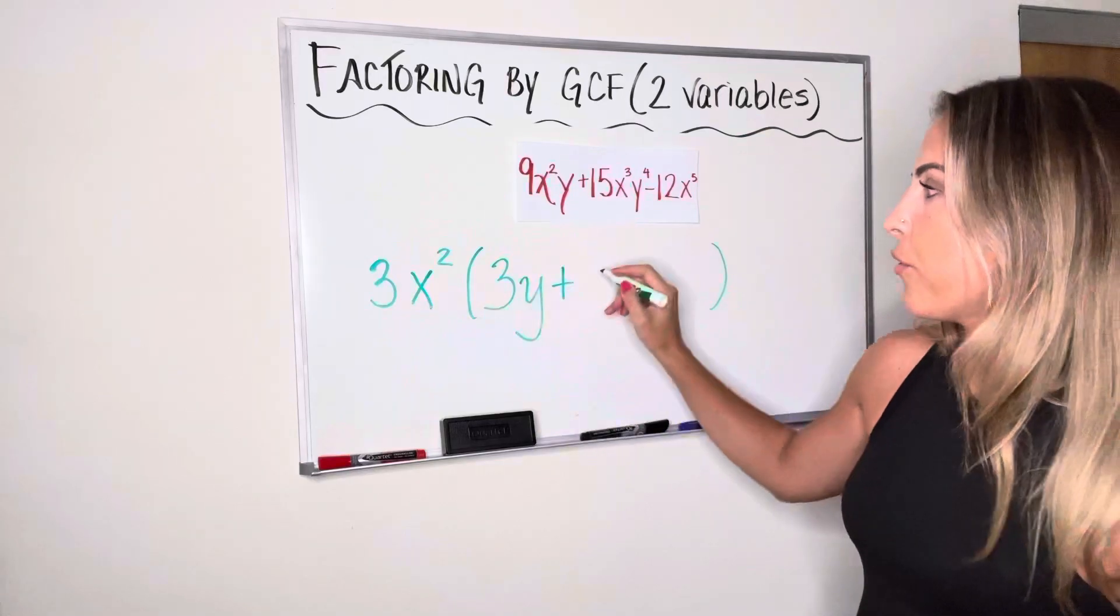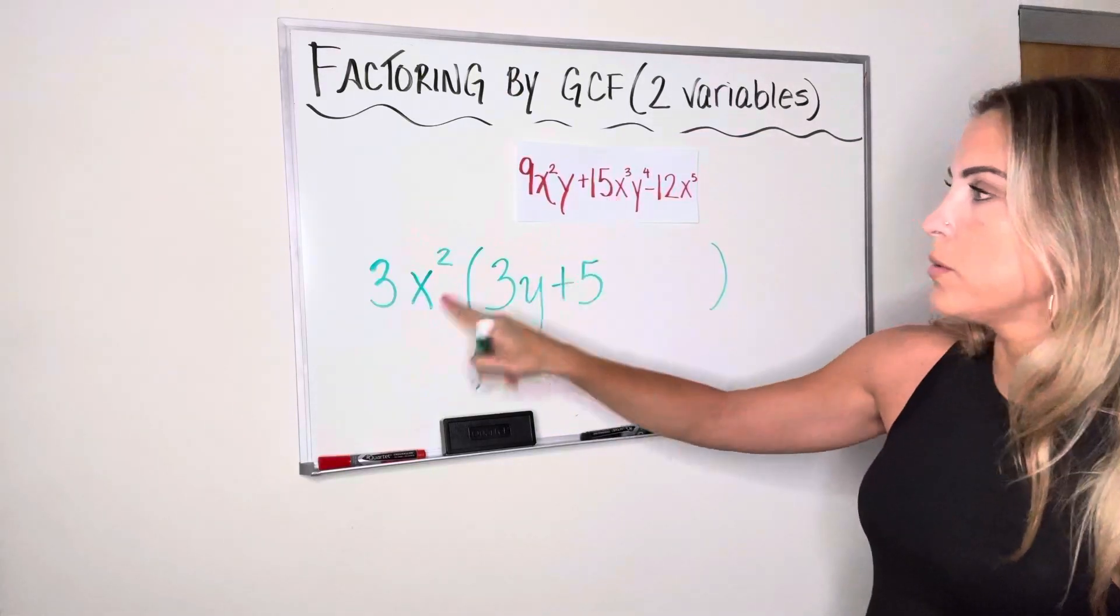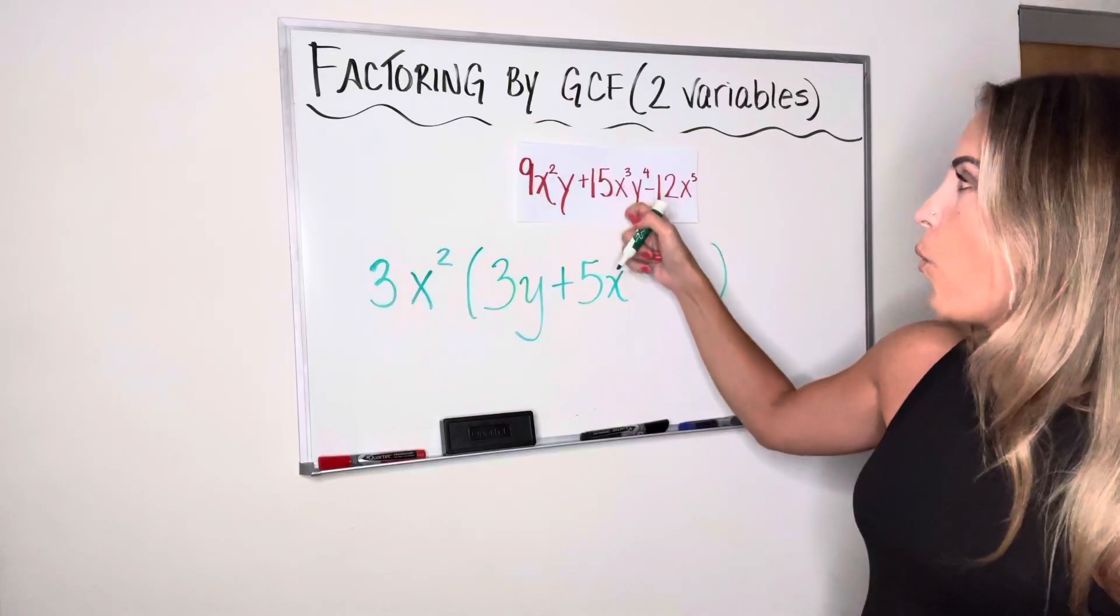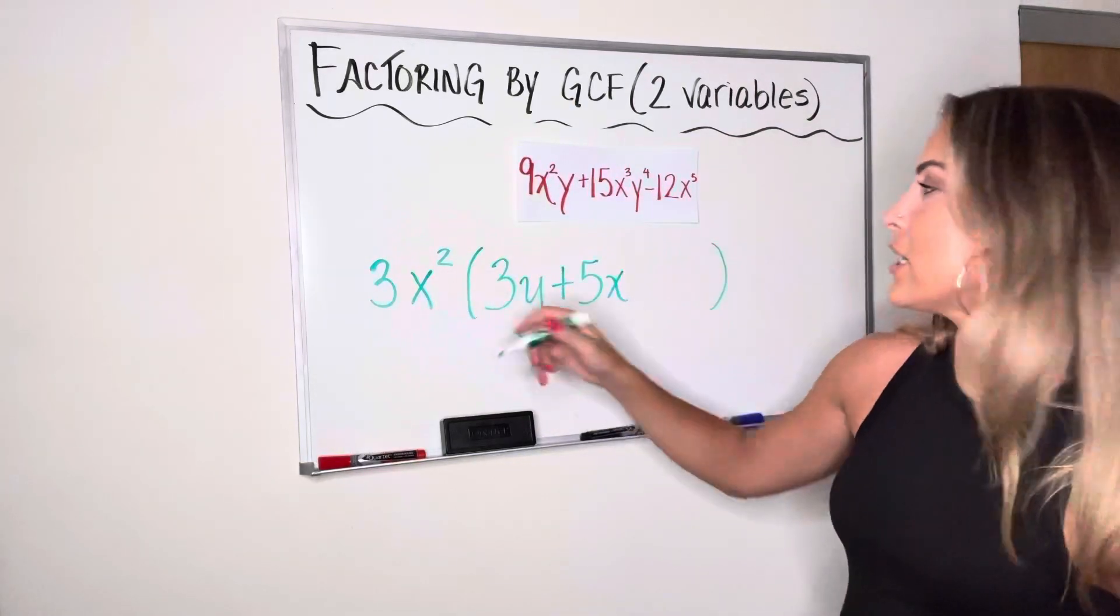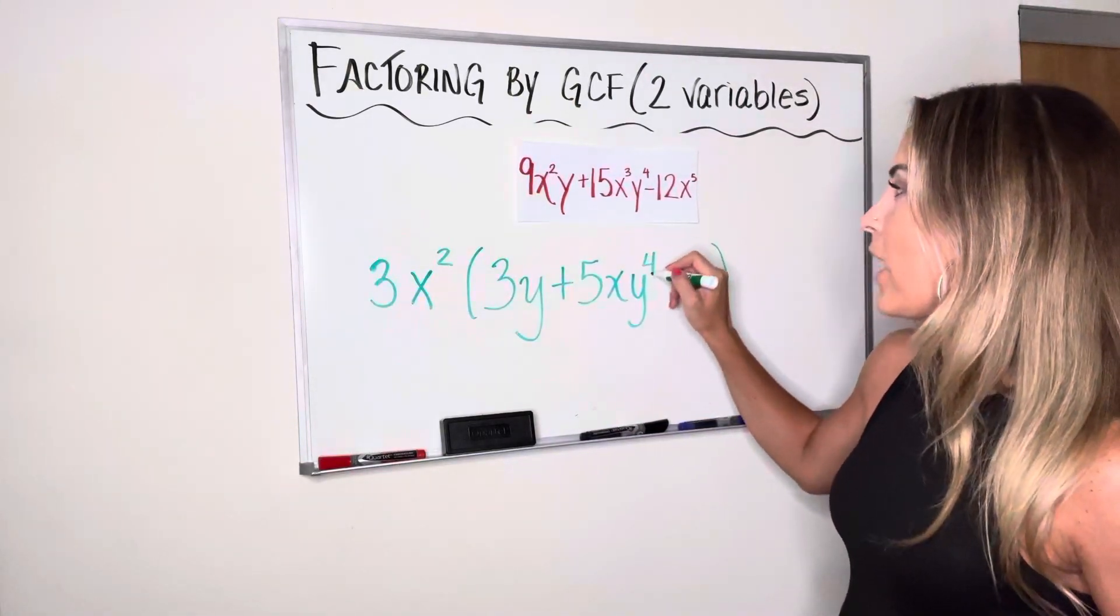Plus 15 divided by 3 is 5. x cubed divided by x squared is x. For y to the fourth, again, I have no y's in my GCF, so I need all of those y's. I need y to the fourth.